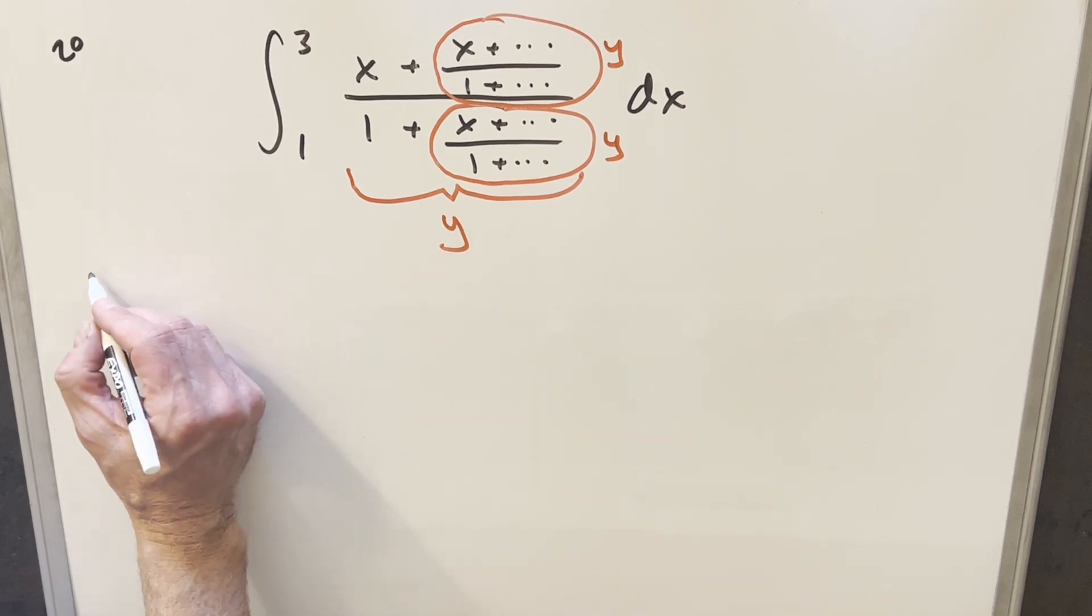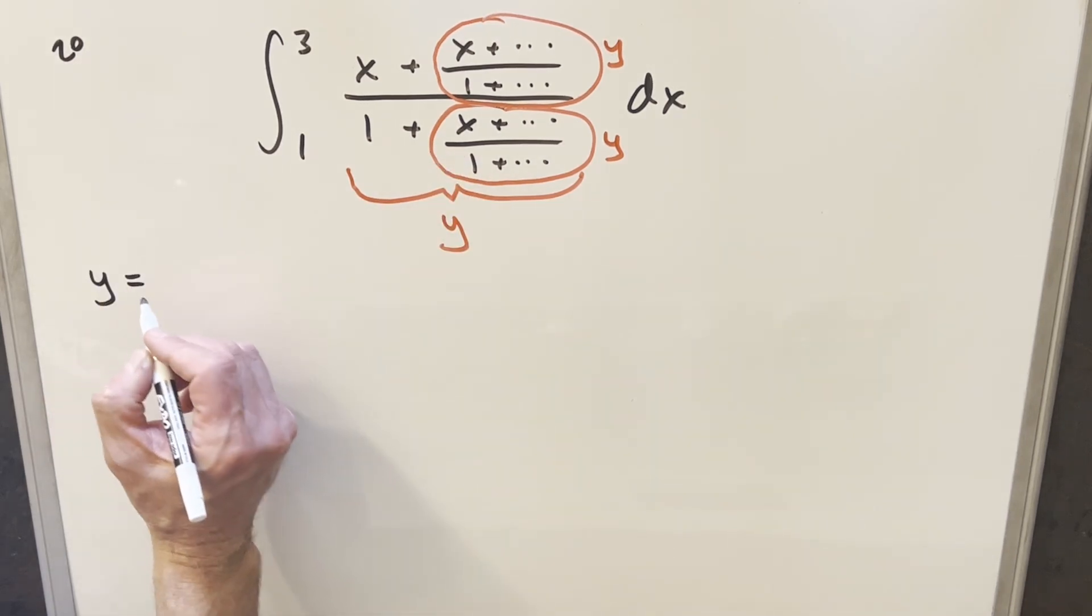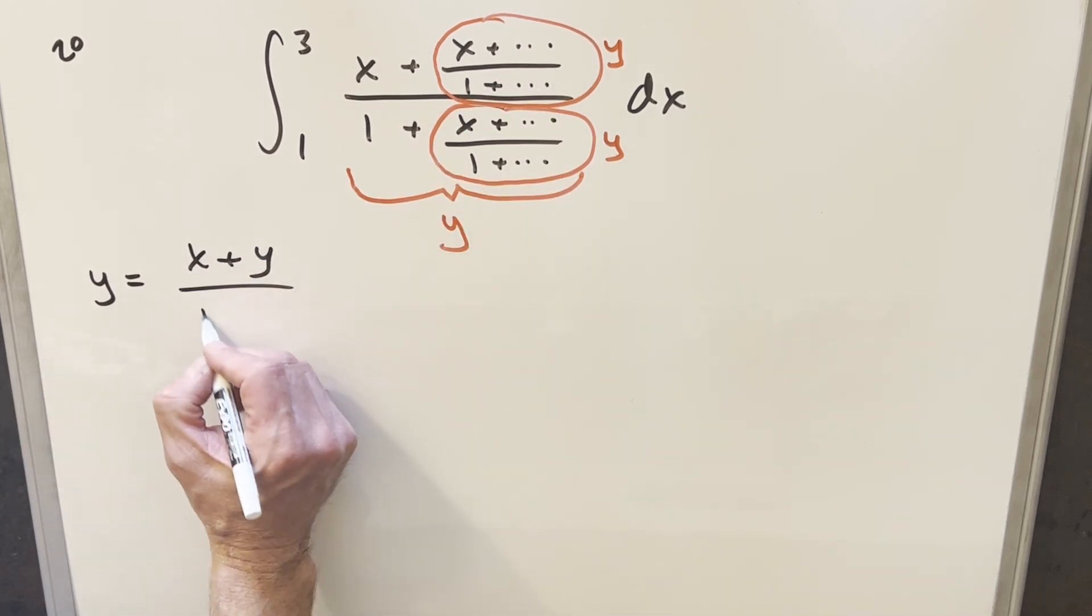Well, it turns out that what we have circled here, this is exactly the same thing as our y. So what this allows me to do is rewrite this thing, our whole expression, the thing we want to transform, we're calling y. But then the numerator just becomes x plus y, and the denominator becomes 1 plus y.